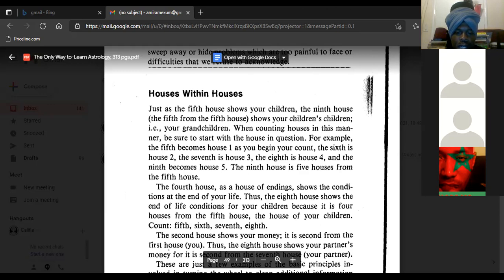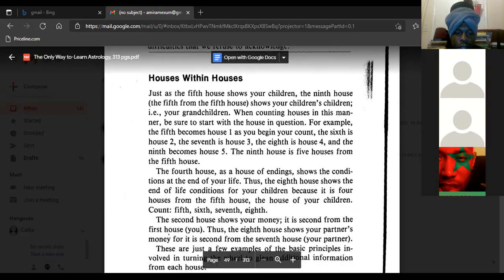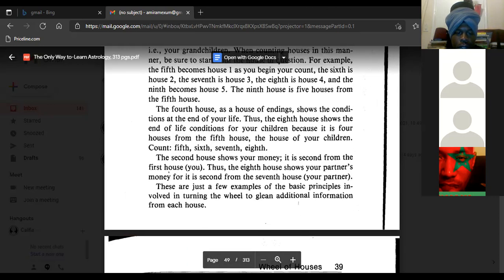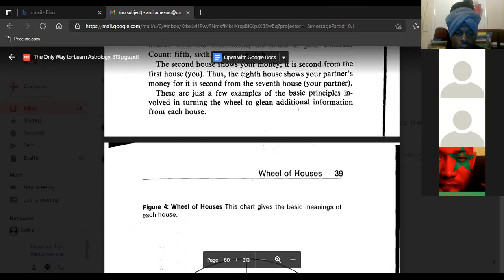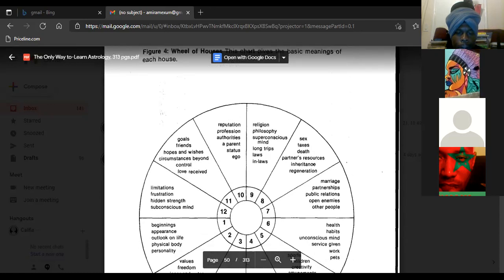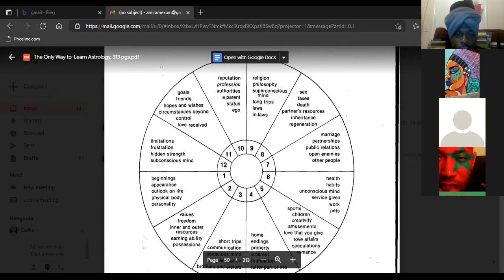The second house shows your money; it is second from the first house, you. Thus the eighth house shows your partner's money, for it is second from the seventh house, your partner. These are just a few examples of the basic principles involved in turning the wheel to glean additional information from each house. Figure four, wheel of houses. This chart gives the basic meanings of each house.